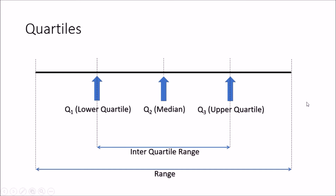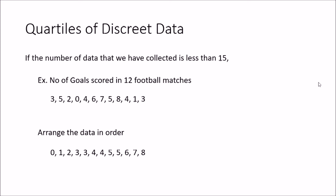These spread measurement parameters help us identify how spread out a data set is. Now we will move forward and find the spread measurements for different types of data sets — discrete data, discrete grouped data, and continuous grouped data.